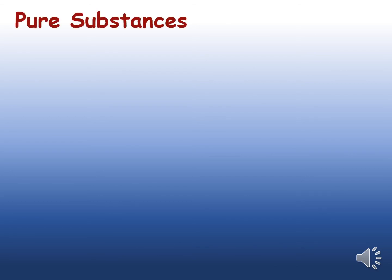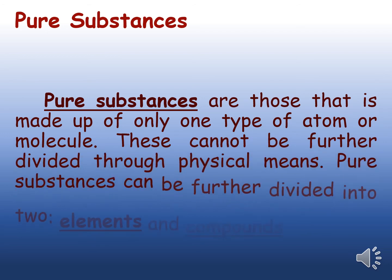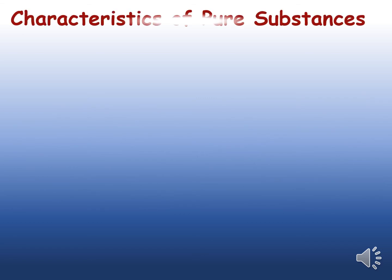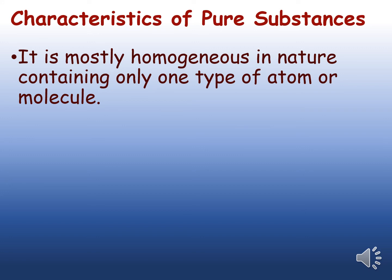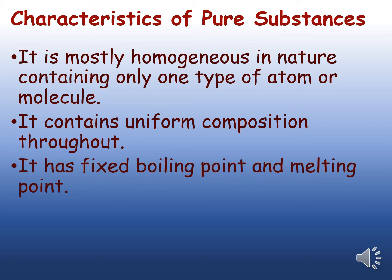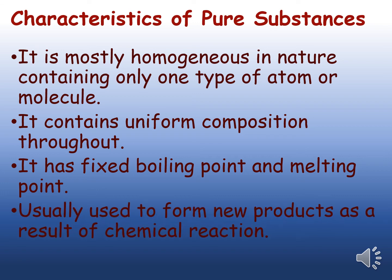Let us define pure substances. Pure substances are those that are made up of only one type of atom or molecule. These cannot be further divided through physical means. Pure substances can be further divided into two: elements and compounds. A pure substance is mostly homogeneous in nature, containing only one type of atom or molecule. It also has uniform composition throughout, meaning it has the same property in any part of it. It has a fixed boiling point and melting point.